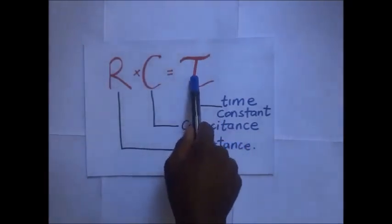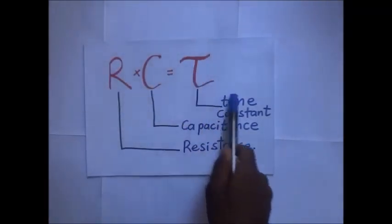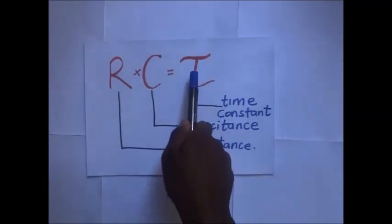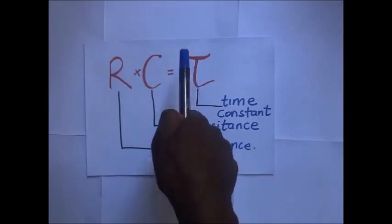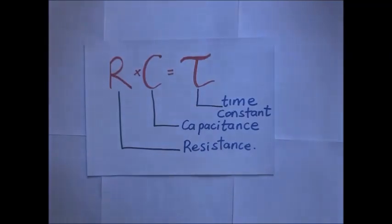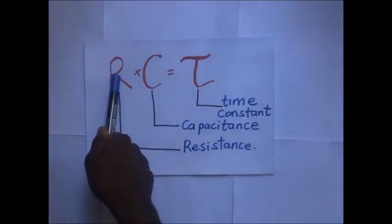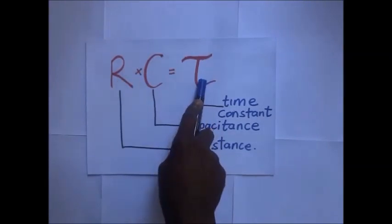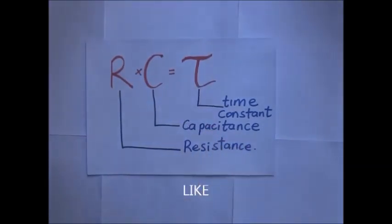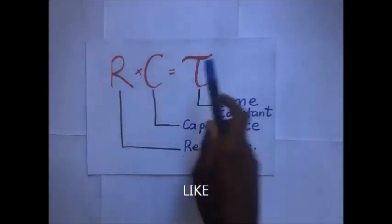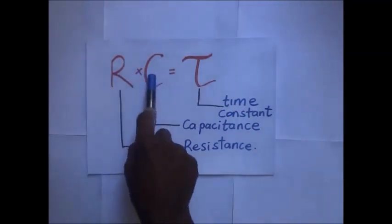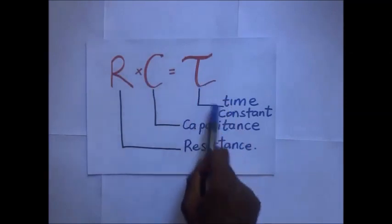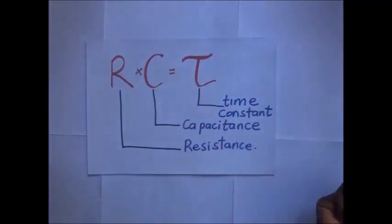R times C gives us a constant we call the time constant. This constant characterizes the rate of charging and discharging of the capacitor. If R or C is small, the time constant is small and the rate of charging and discharging is faster. If both resistance and capacitance are large, the time constant is large and the rate of charging and discharging is slow.